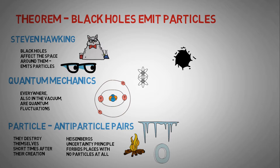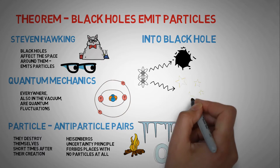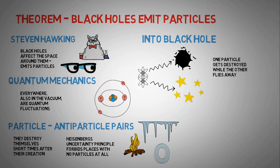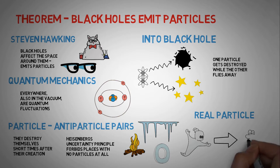one of these two virtual particles can fall into the black hole, and since the other particle cannot annihilate itself now, it flies away and becomes a real particle or antiparticle.